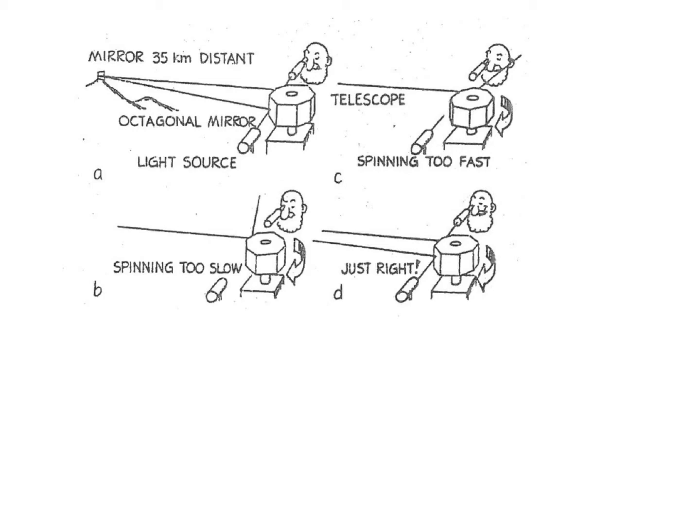The mirror has to turn one eighth of a turn so it's lined up again so that the original beam of light that had reflected off the first surface went down to the mountain, came back, bounced off that mirror into the eyepiece that he could see if the spin rate was fast enough.